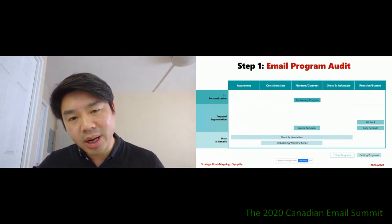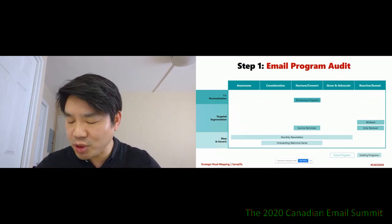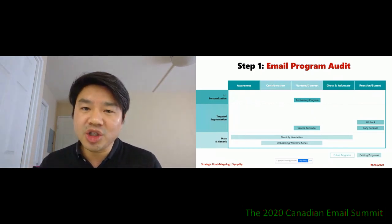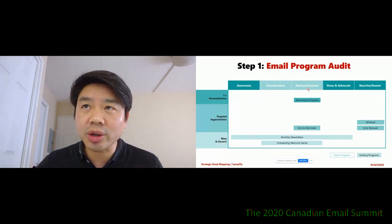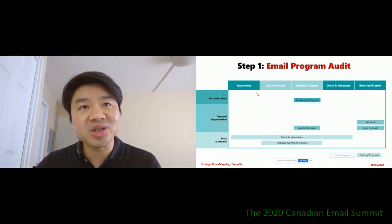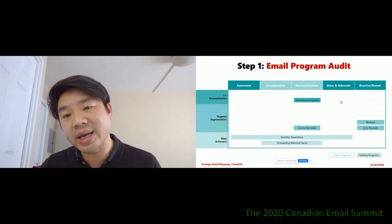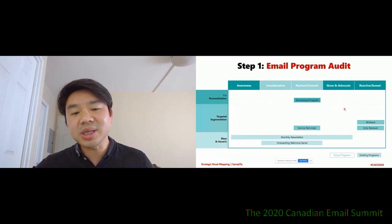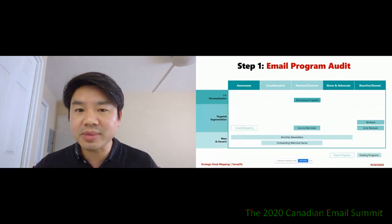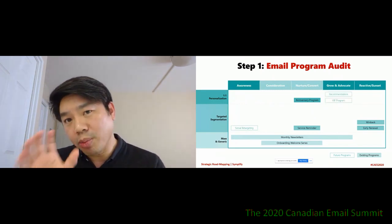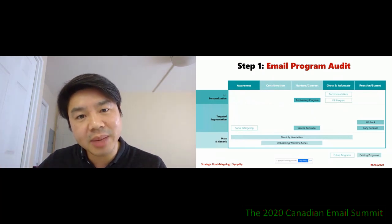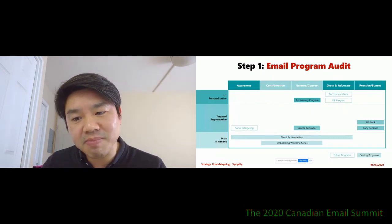Beyond the existing programs, by doing the foundation work, you're going to identify new programs. One of the things you might also want to do is quickly look at this visual. What you'll see is that under nurture and conversion there are several programs, but there seem to be gaps in awareness and gaps in grow and advocate. Just by visually looking at this you know there are opportunities — programs that are missing that you need to deliver. There should be no white space on this map. If there is white space, you're missing an opportunity to connect with your audience in a meaningful way.